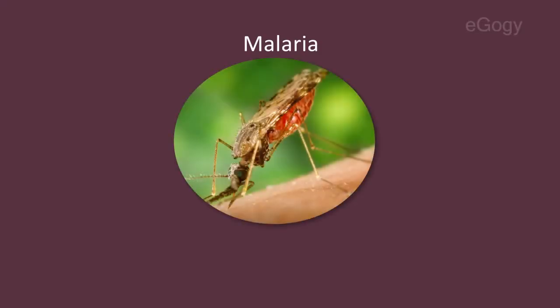Malaria is a mosquito-borne infectious disease that affects humans and other animals. It is caused by parasitic protozoans. Commonly, the disease is transmitted by the bite of an infected Anopheles mosquito. Disease transmission can be reduced by controlling mosquito breeding.